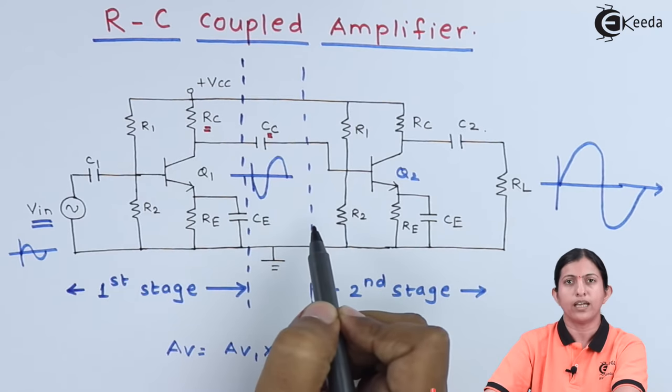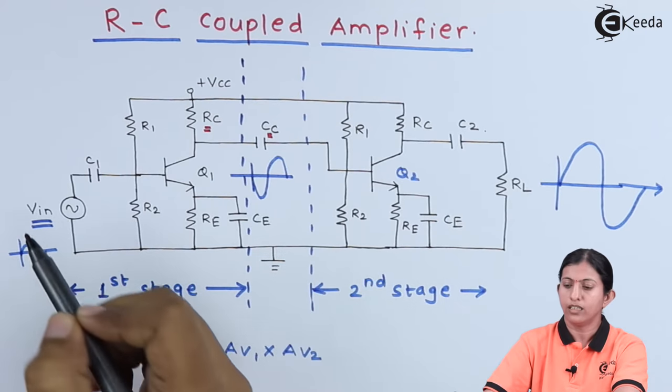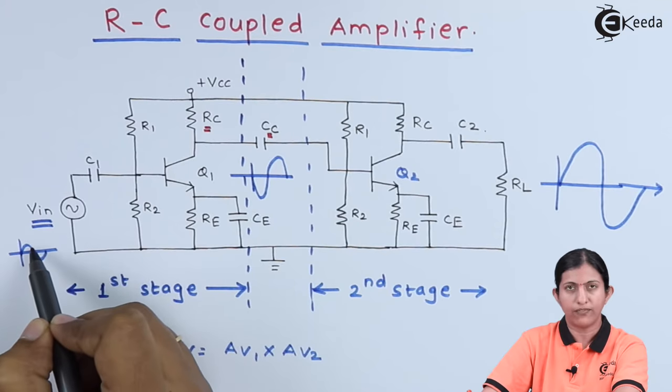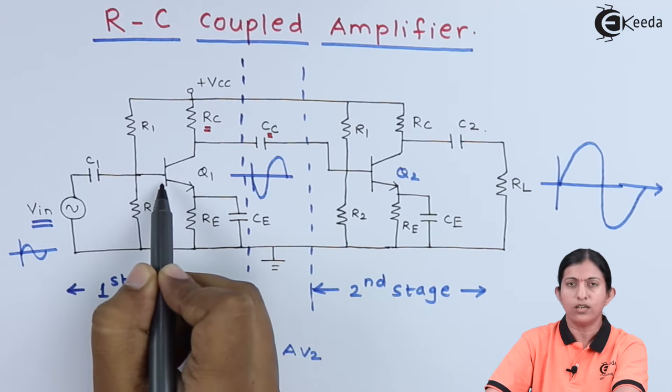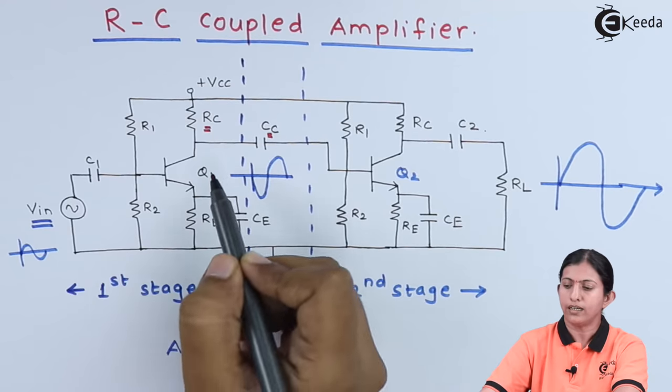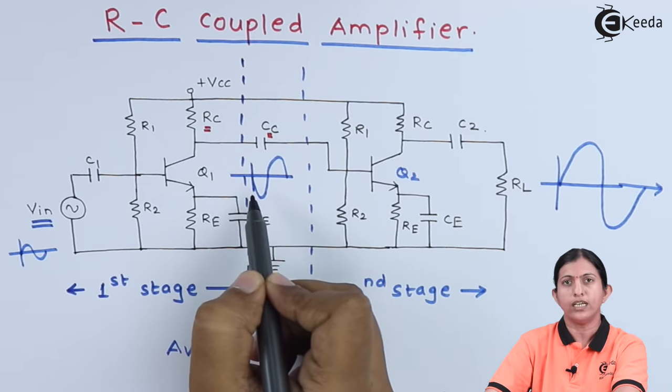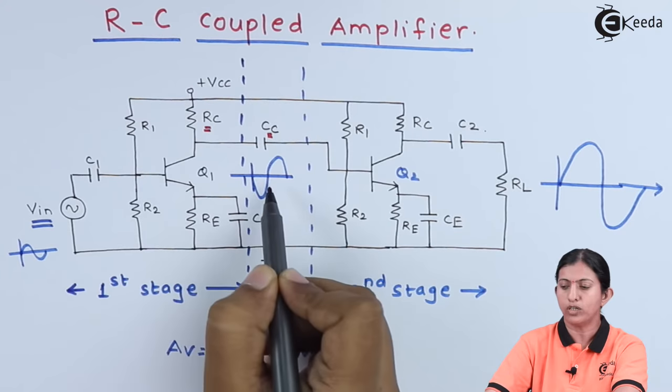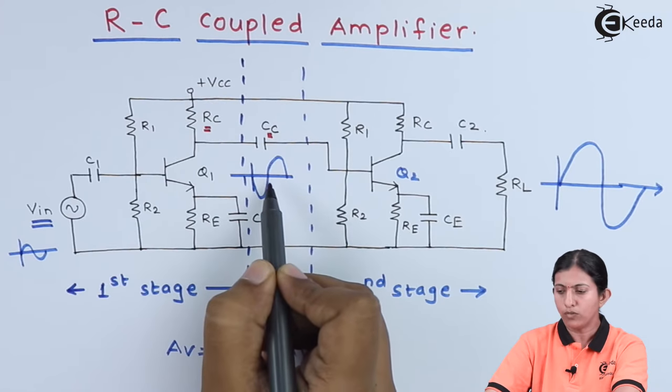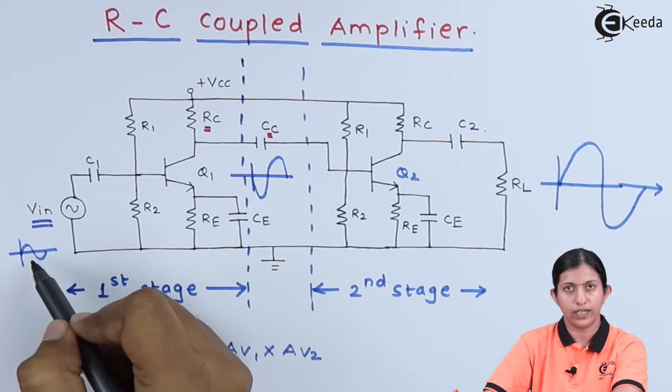The circuit operation can be explained as follows: the weak signal which is to be amplified is applied to the base of the first stage. It amplifies the signal and we get a 180 degree phase shift between the input and output. The output is an amplified version of the input signal.